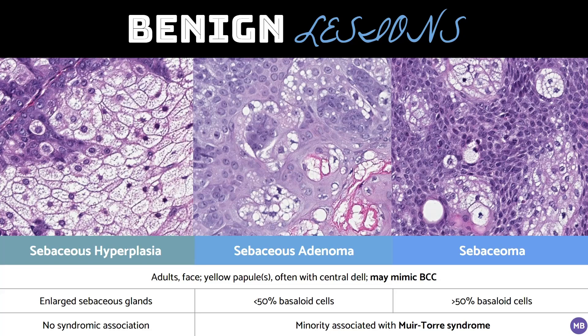Most sebaceous adenomas and sebaciomas are sporadic, but a minority are associated with Muir-Torre syndrome, especially in younger patients, those with multiple extrafacial tumors, and tumors with cystic change. However, none of these features are diagnostic. For instance, the sebaceous adenoma I just showed did have some cystic change; however, given that this was a solitary lesion in an older adult with no significant history, additional testing such as immunohistochemistry for mismatch repair proteins would not be indicated. For information on the use of MMR-IHC for Muir-Torre syndrome, I've provided a link to the current guidelines in the description.